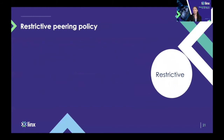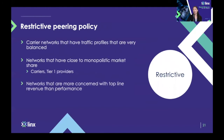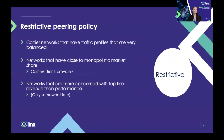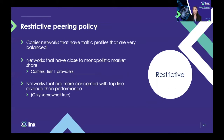And then finally, restrictive peering policy. That's very common among large carrier networks that have very balanced traffic profiles. It can be networks that are very close to monopolistic market shares like carriers and Tier 1 providers, and networks that are more concerned with top line revenue than performance.